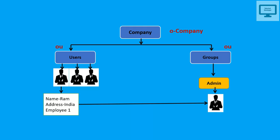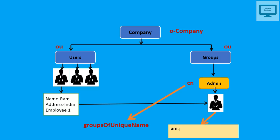In the case of a group's unique member, we use the unique member attribute. To reference Ram as a unique member of a group: uniqueMember=CN=Ram, OU=Users, O=Company. This is how you reference a person as a member of a group using the unique member naming convention.